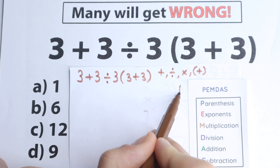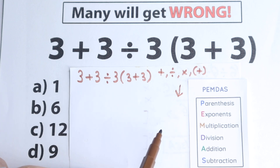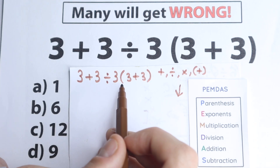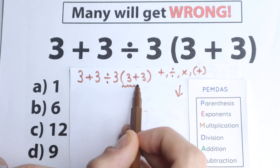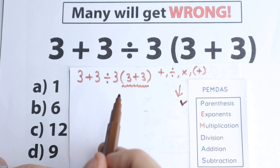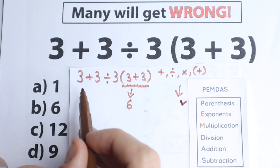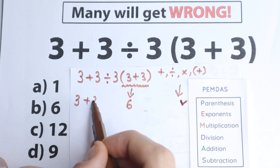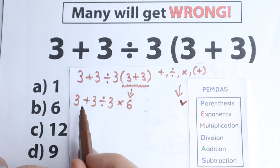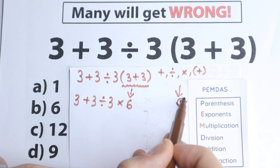Here's our order of operations. This order goes from top to bottom, and we have six steps. The first step is parentheses. Where do we have parentheses? We have: 3 plus 3 divided by 3, and in parentheses 3 plus 3. Right here we have parentheses, so we start here. 3 plus 3 equals 6. So after the first step we have this expression: 3 plus 3 divided by 3, times 6. We complete this first step.